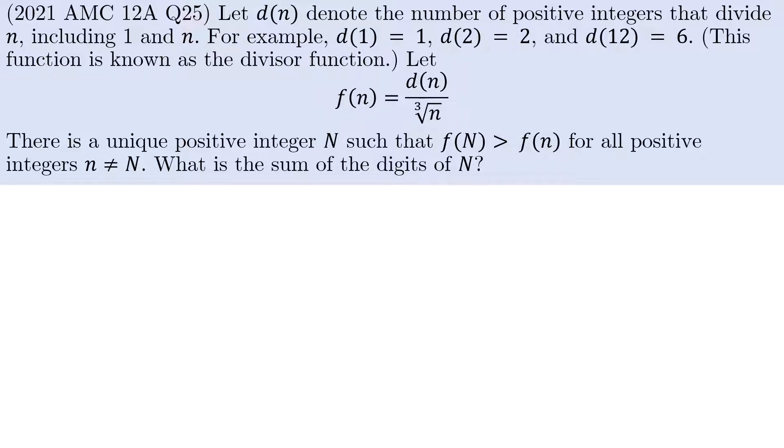Let f(n) be equal to d(n) divided by cube root of n. There is a unique positive integer, capital N, such that f(N) is bigger than f(n) for all positive integers n not equal to capital N. What is the sum of digits of capital N? Basically, we need to find the value of n that maximizes f.